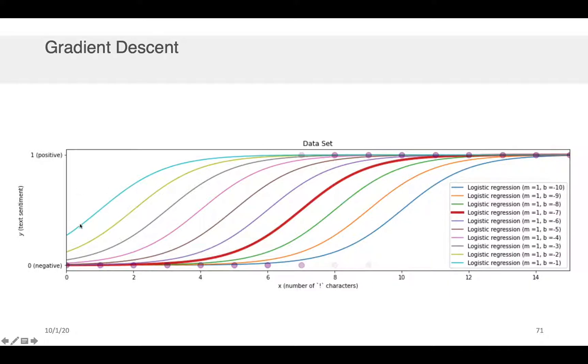And one thing I could try to do is I could iterate over many different values of m and b. So in this case, each of the color of the lines corresponds to a different value of b when I hold m to be 1. And what you can see is that as a function of the value of that parameter, the line is shifting around.